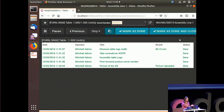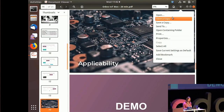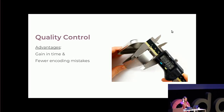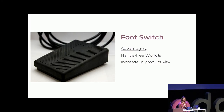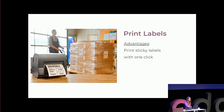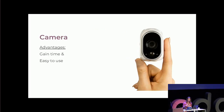Now I can close my work order. I've used all four devices connected to my IoT box. To summarize: I used a caliper for quality control, which takes measurements and sends them directly to my quality control points — saving time and reducing encoding mistakes. I used the foot switch to keep my hands free while assembling the table and to move directly from one step to the other. I used the Zebra printer to print the serial number label in just one click. And I used the camera to take a picture — again just one click, nothing more complicated than what workers were doing previously.